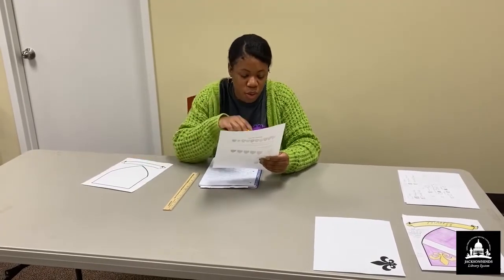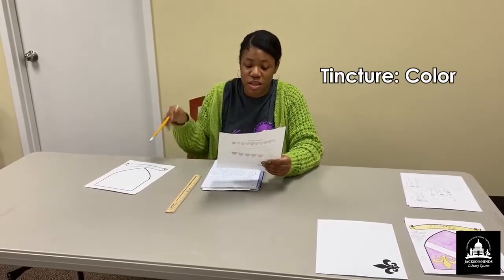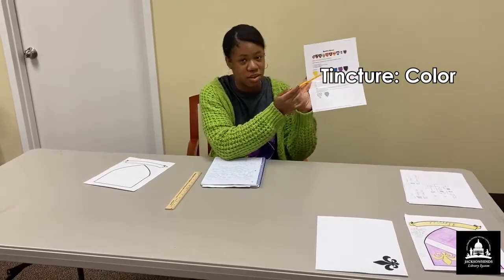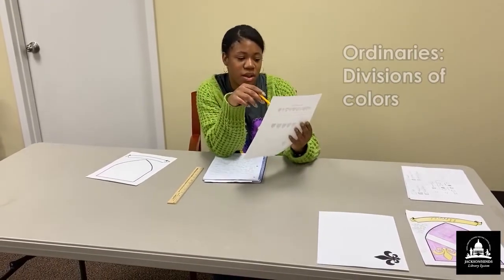So we have an escutcheon. We have a tincture. That's going to be the color. So if you can look here, these are going to be the colors that we have, and the ordinary.